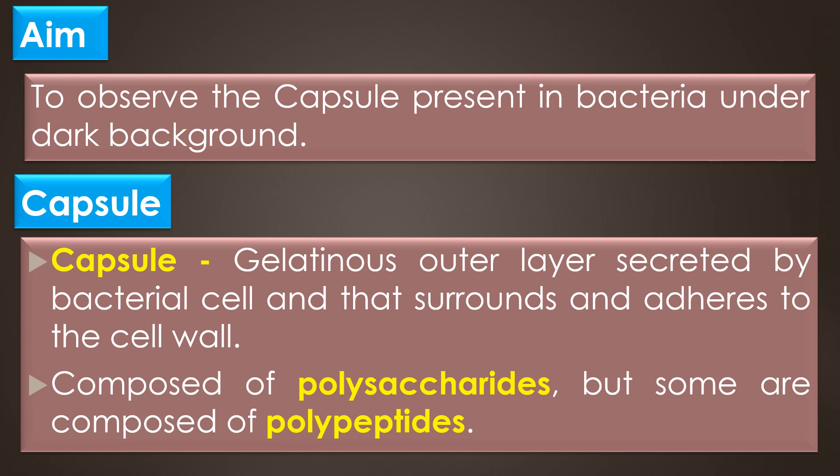A capsule is a gelatinous outer layer secreted by the bacterial cells like Klebsiella pneumoniae and Streptococcus pneumoniae, and that surrounds and adapts to the cell wall. Most capsules are composed of polysaccharides, but some are composed of polypeptides.